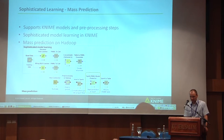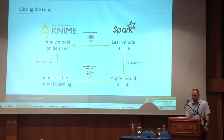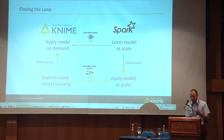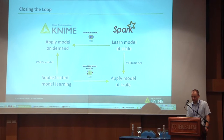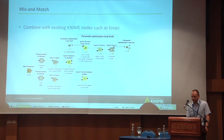To close the loop: KNIME is great at building more complex, advanced models. Spark is better for building models at large scale. Once a model is built, you can choose to deploy it on the remote Spark side or locally in KNIME. You can also mix and match — for example, doing parameter optimization or feature selection modeled in a KNIME workflow but actually executed in a Spark cluster.